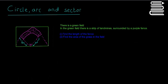The two questions we're asked: first, find the length of the fence — the solid purple line, not the dotted line. And second, find the area of the grass in the field, which is everything that isn't the purple dotted landmine strip. So I'll start by getting the length of the fence.